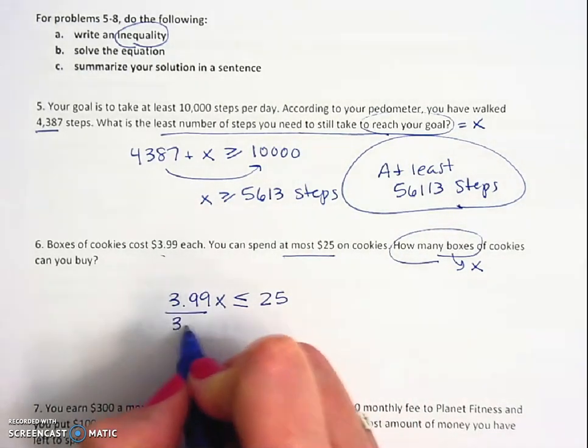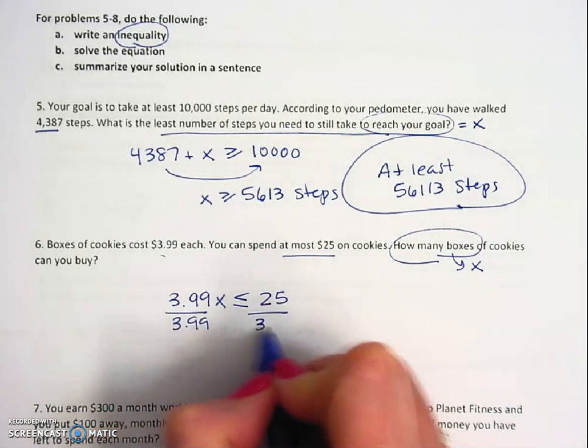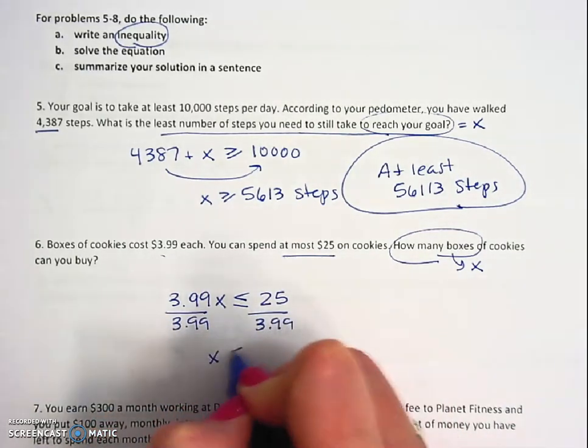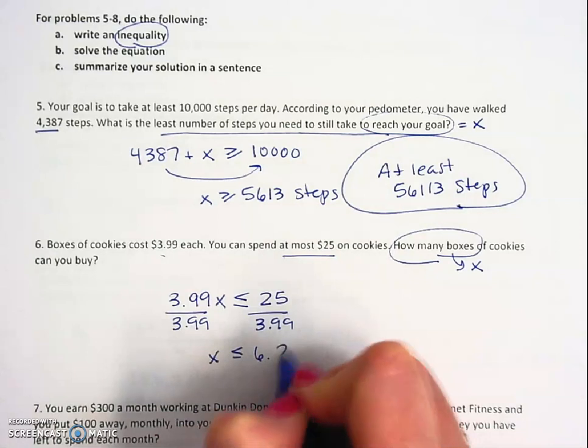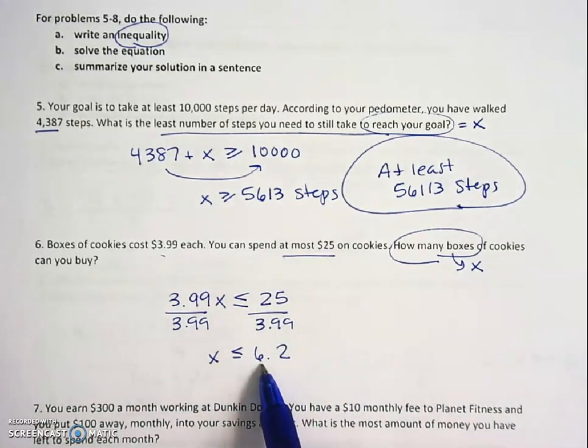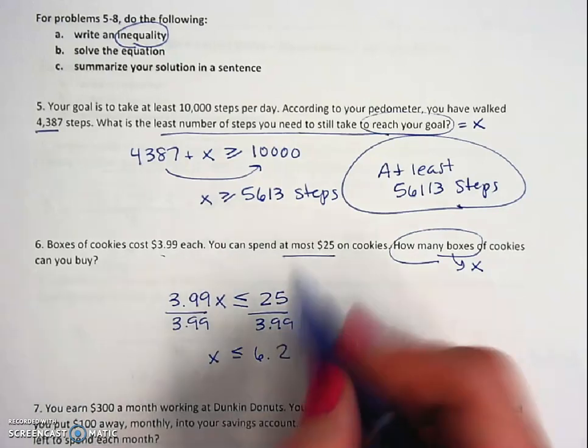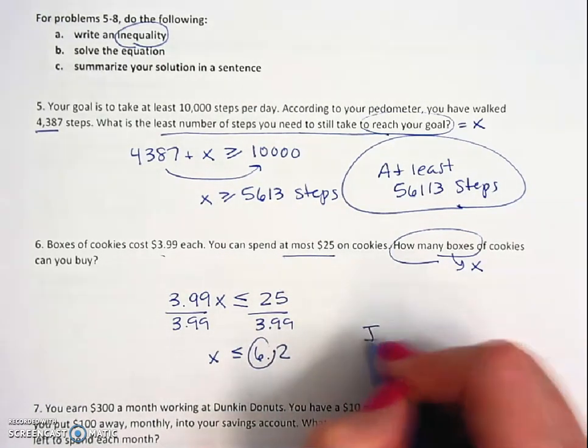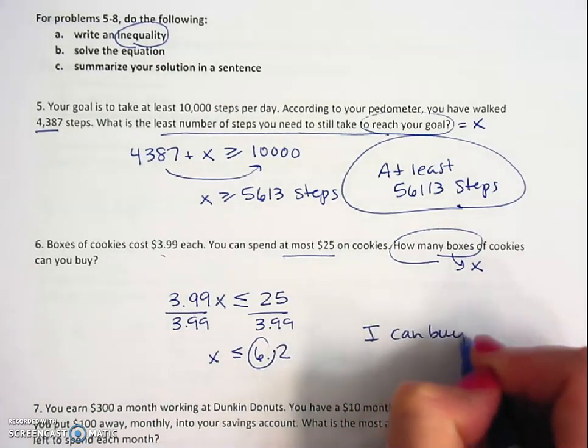So then we just divide by 3.99, and it says x has to be less than or equal to 6.2. So that means I can buy six boxes and two-tenths of a box, but we don't buy two-tenths of a box, right? So I can buy up to six boxes.